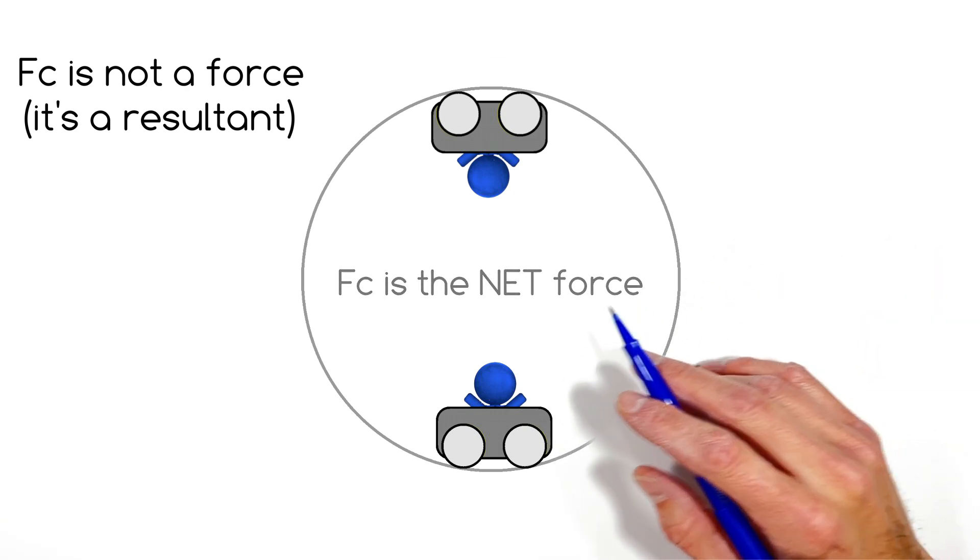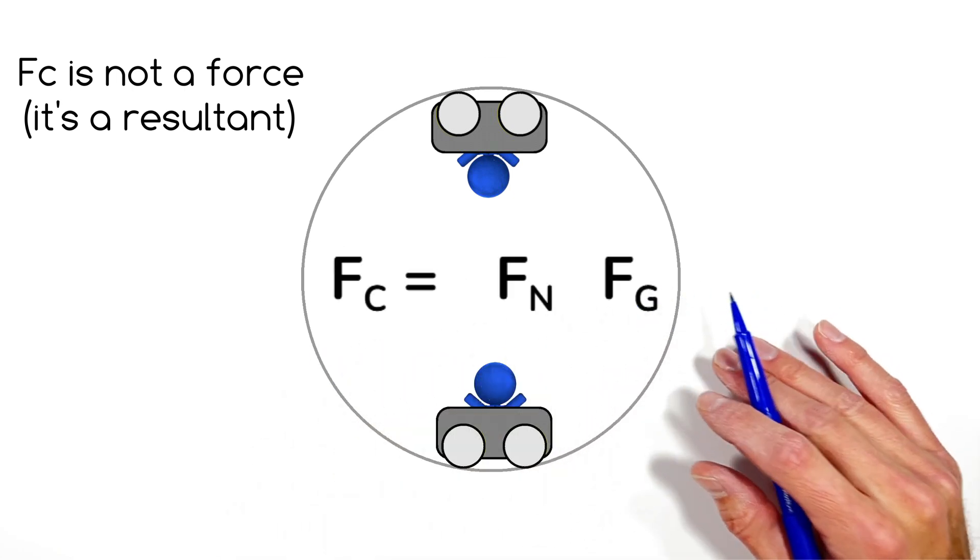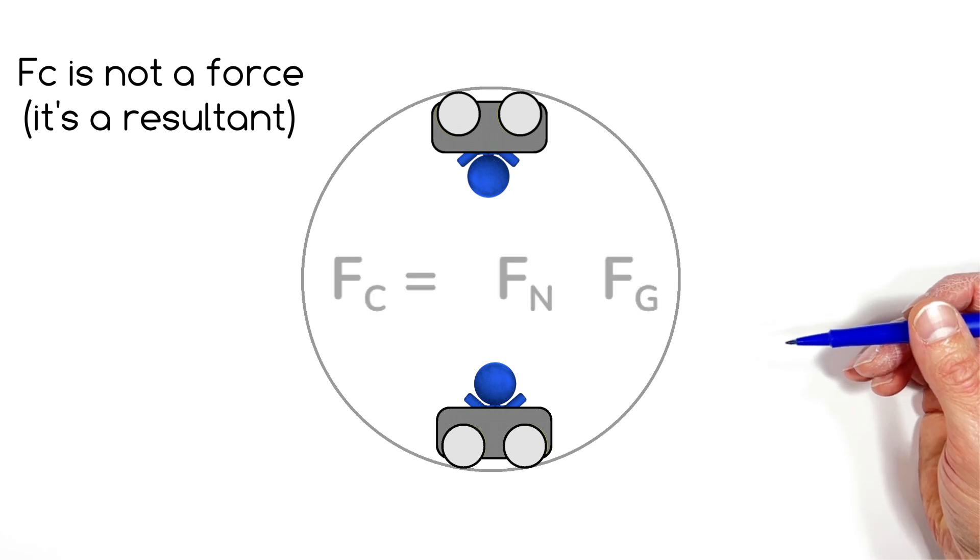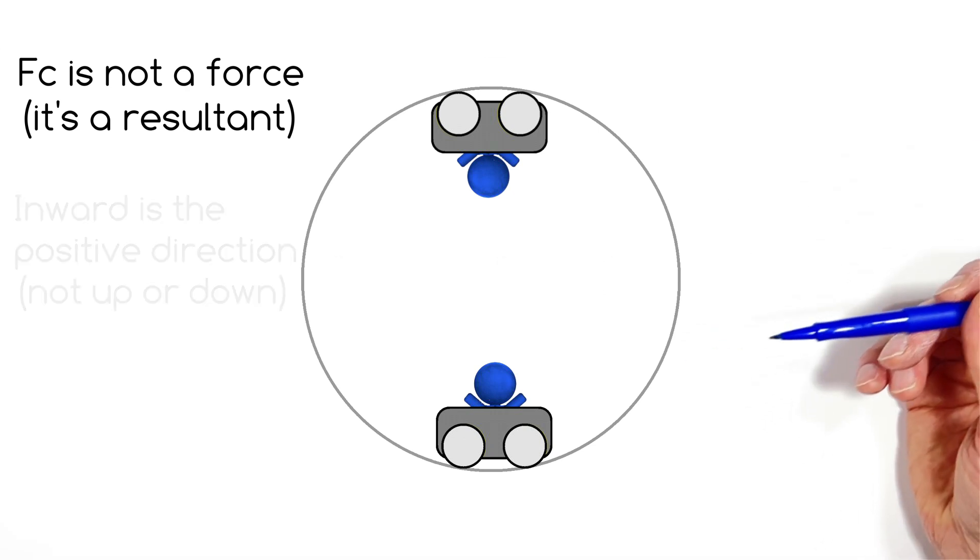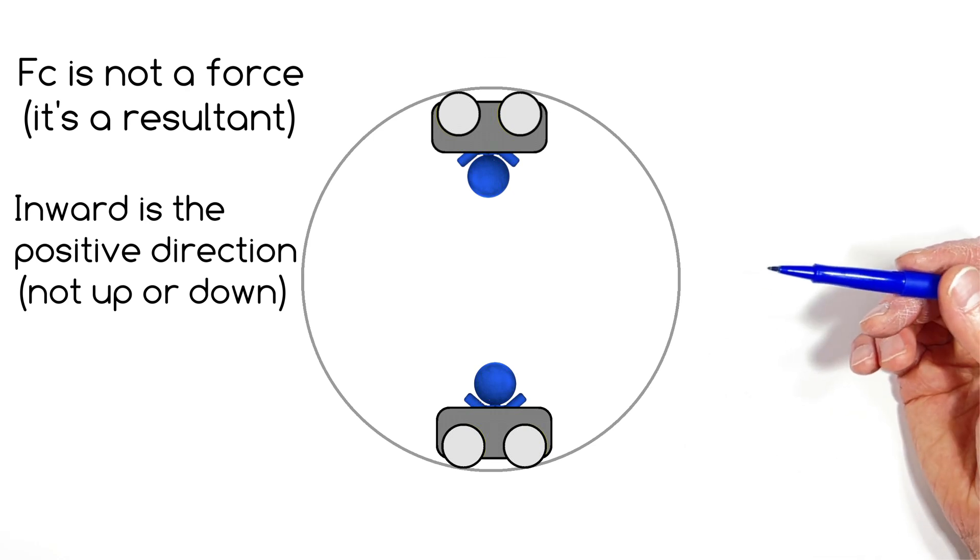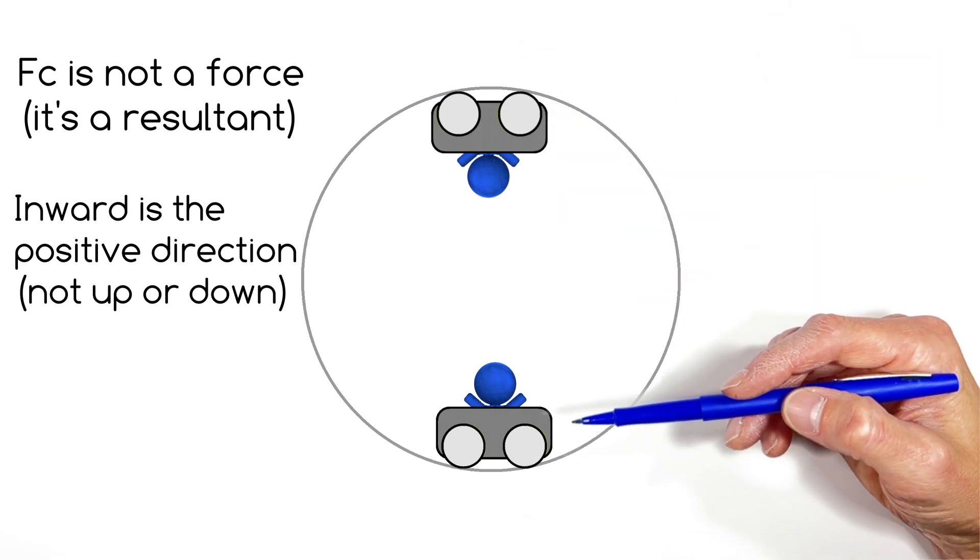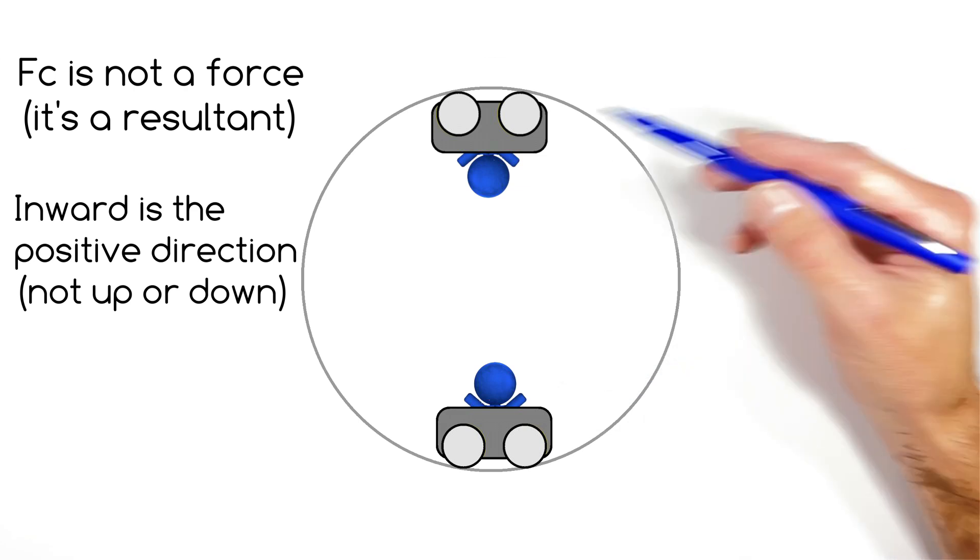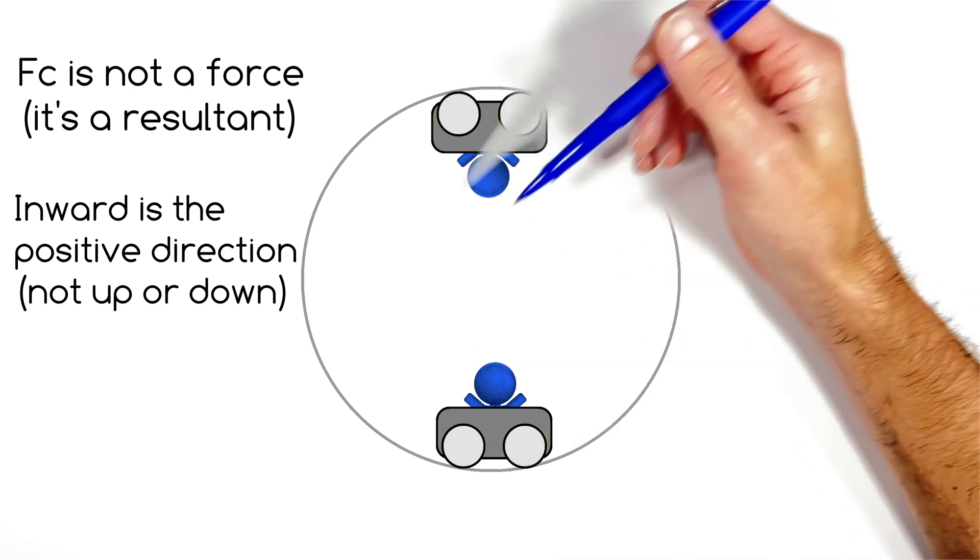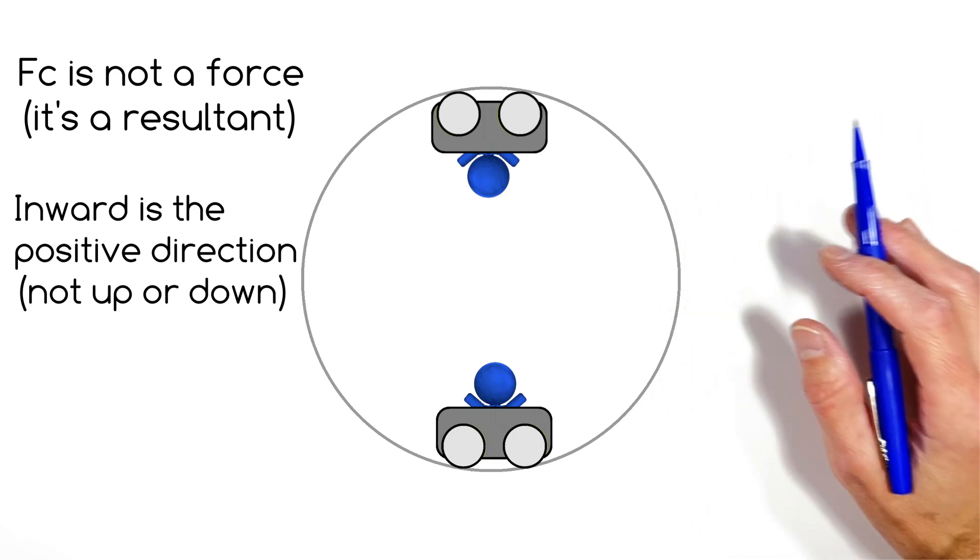And that means we're always going to be setting the centripetal force equal to the forces that are acting on some object going in a circle. The next thing you need to know is we're always going to say that inward toward the center of the circle is the positive direction. You might be used to saying that up is positive and down is negative, probably from something like a kinematics unit. But here we need to say that anything acting inward is positive and any force acting outward is in the negative direction.